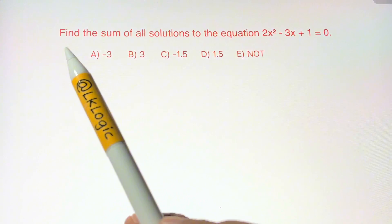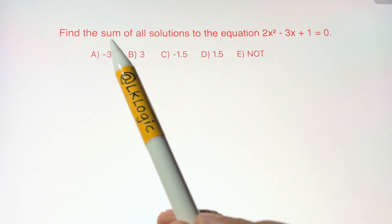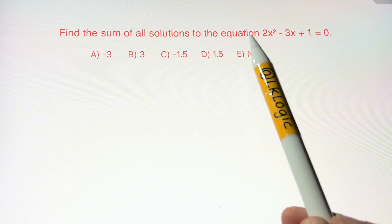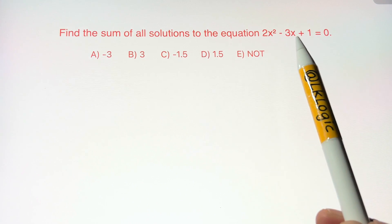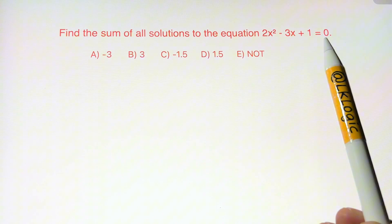Hi guys, here we have an interesting question which says find the sum of all solutions to the equation 2x² - 3x + 1 = 0.